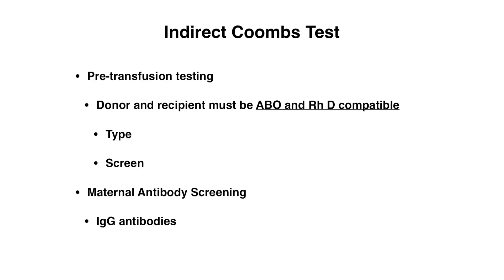What are indications for performing an indirect Coombs test? This could involve pre-blood transfusion testing in order to make sure that the donor and recipient are compatible and limiting the risk of hemolytic reactions. The donor and recipient must be ABO and RHD compatible — two major antigens on the surface of red blood cells. This often involves the type and screen: the type ensures ABO and RHD compatibility, but the screen checks for any possible antibodies that could cause trouble. This antibody screen is actually the indirect Coombs test, so you'll often hear these two used interchangeably.